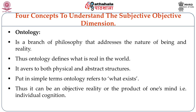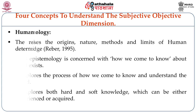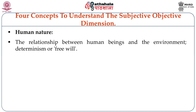Ontology covers a broad dimension, from the objective to the subjective. Epistemology is basically about how we come to know about what exists — someone tells you, you observe, you interpret — and all these methods help you understand what is happening around you. What we know and how we come to know is dependent upon human nature: how we build relationships with each other, and not only human beings but also with the environment. Human nature needs to be understood from all these dimensions.